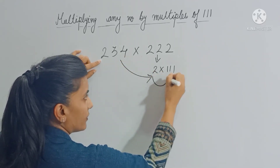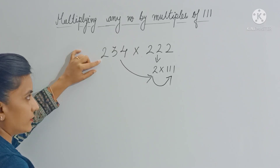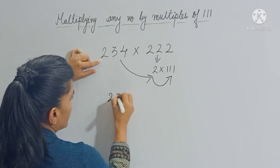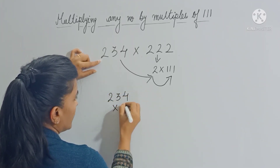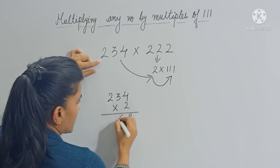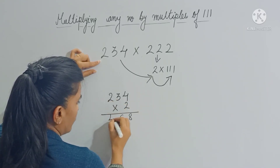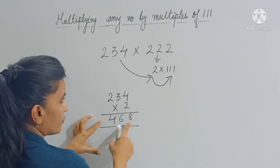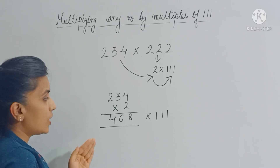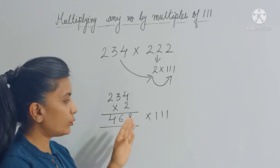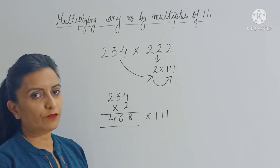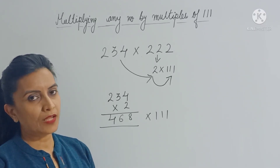So the first step is 234 × 2, which gives you 468. Now we will multiply 468 by 111. To multiply any number by 111, there is a trick, and I have already done a video explaining how to multiply any number by 111.